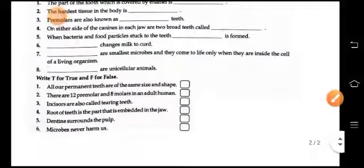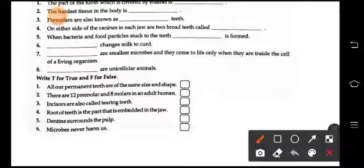Then write true and false. All our permanent teeth are of the same size and shape - false. There are 12 premolars and 8 molars in an adult human - false. Okay, rest you do yourself.